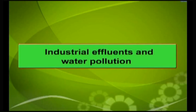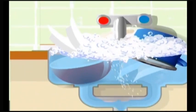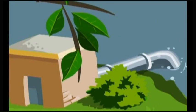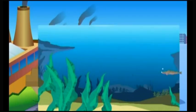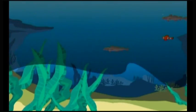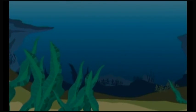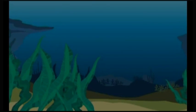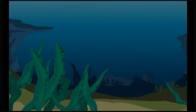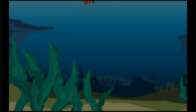Let us now see the industrial effluents and water pollution. Water is used as a solvent for cooling and for washing in industries. Used water discharged from the industries is called industrial effluent. This contains a variety of chemicals depending on the type of industry. These chemicals may be inorganic chemicals or organic substances.